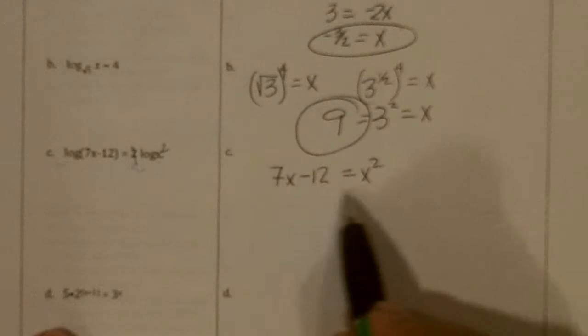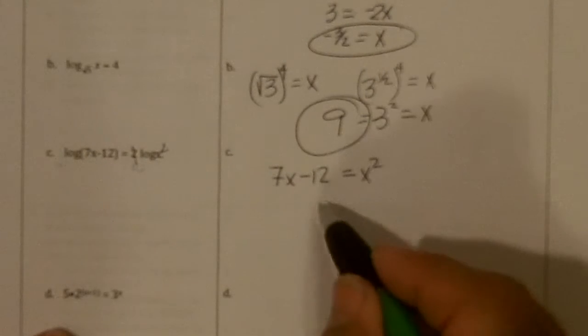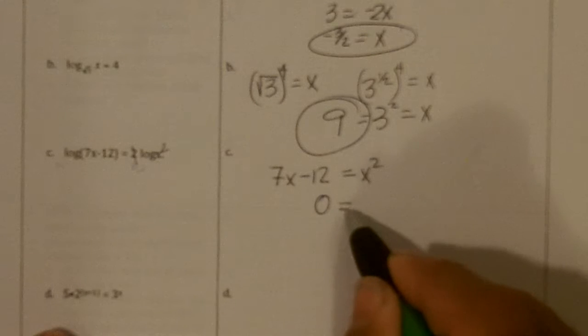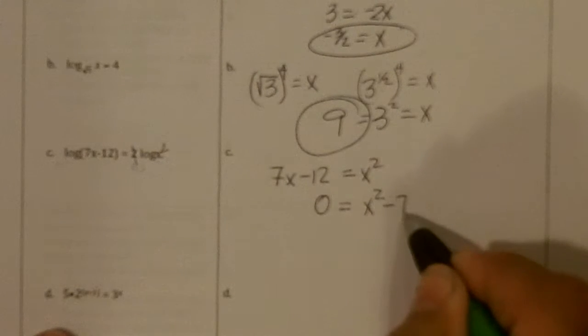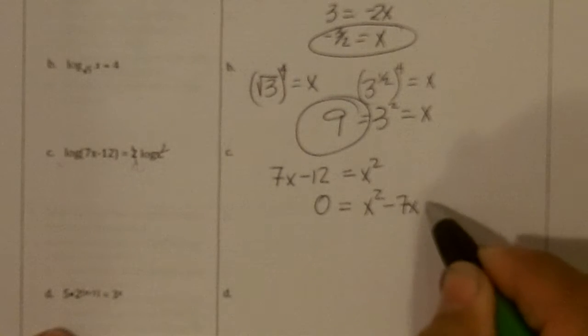I recognize this as a quadratic, and so I make it equal to 0 by subtracting 7x from both sides and adding 12 to both sides.